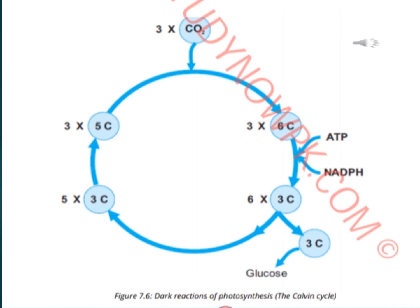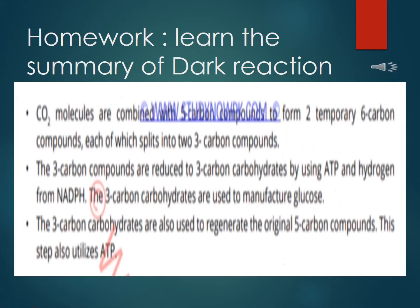Then again this three-carbon compound regenerates the five-carbon compound enzyme. This is the basic overview of the dark reaction of photosynthesis. Your homework is to learn the summary of dark reaction.